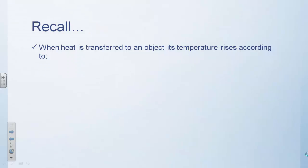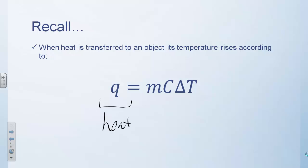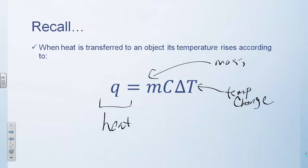When heat is transferred to an object, its temperature rises according to this equation. Q stands for the heat — this could be heat flowing to or away from that object. M stands for the mass of the object, and delta T for the temperature change, which can be in either Kelvin or Celsius since it's the same quantity. C is what we call the specific heat capacity, and it takes on a different value for each substance — gold, platinum, water, air — they all have their own specific heat capacities.